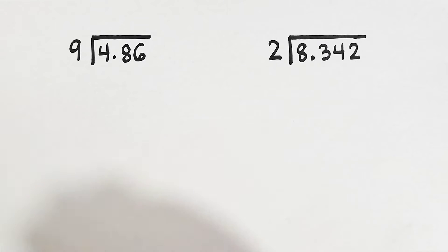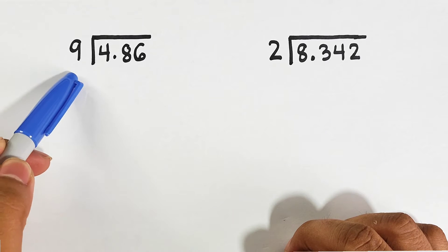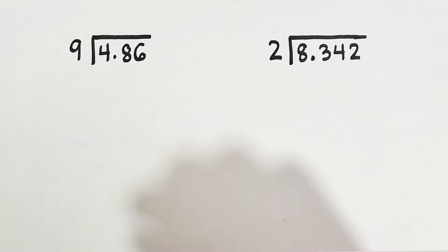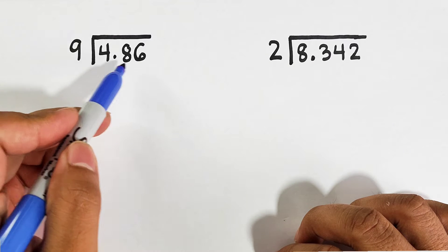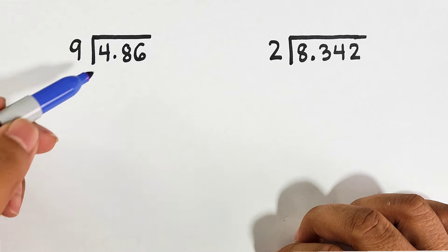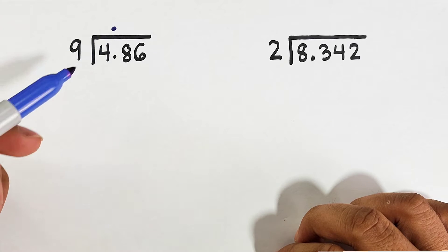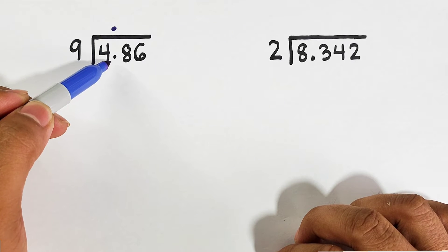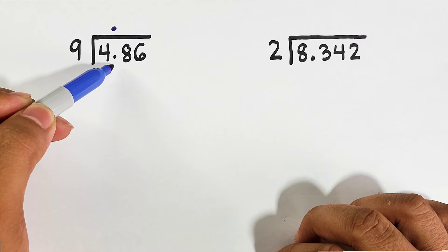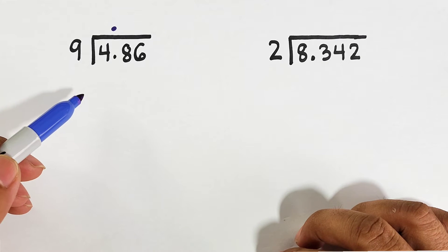In this case we can go directly divide these decimals using this whole number since our divisor is a whole number. Let's start dividing 4.86 by 9. First thing you need to do is to put a decimal point where the original decimal point is in the dividend, and then we can directly divide the decimals.